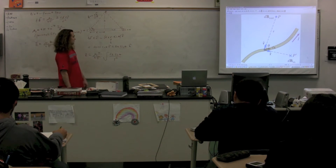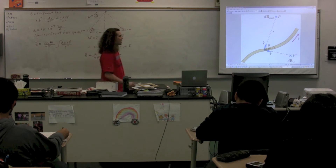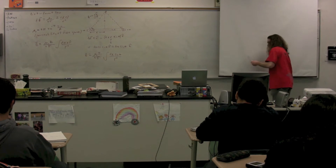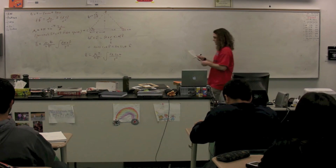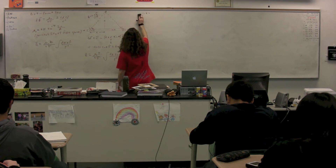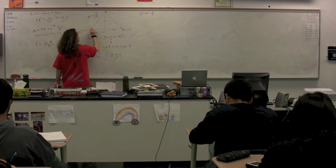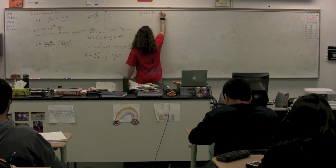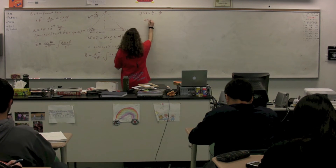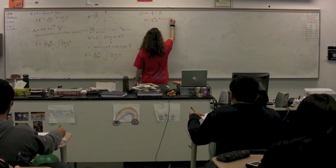Our issue is that the magnetic field equals mu-naught times I divided by 4 pi times the integral of dX times sine theta divided by R squared. We have an integral with respect to X, and we have theta and R. We need a relationship between all these pieces. Sine theta equals opposite over hypotenuse — the opposite is A, the hypotenuse is R. So R equals A divided by sine theta, or A times the cosecant of theta.